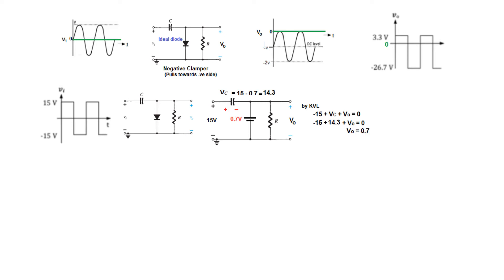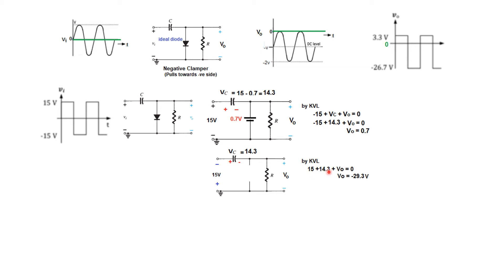Now for the negative half of the input signal, the diode will be reverse biased and act as an open circuit, so all voltage appears across the output. Applying KVL: plus 15 plus 14.3 plus V0 equals 0, giving V0 equal to minus 29.3 volts. So during the positive half the output is 0.7 volts, and during the negative half it is minus 29.3 volts.